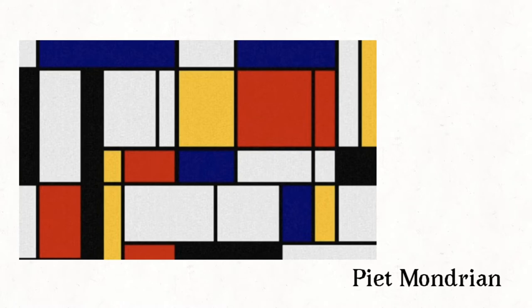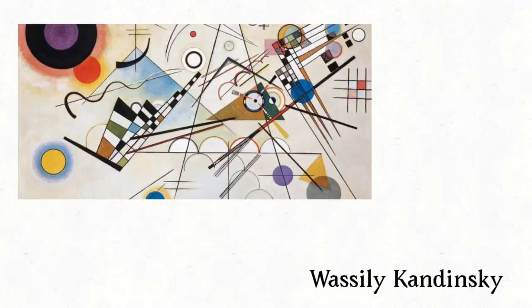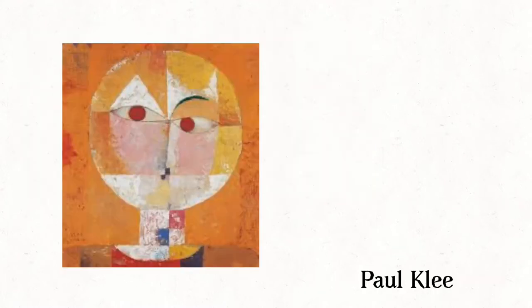Mondrian created abstract art. He just used squares and rectangles and primary colors to create these bold canvases. Vasily Kandinsky pretty much invented abstract art using every geometric shape possible. And then Paul Klee used circles and squares to create this funny-looking head.